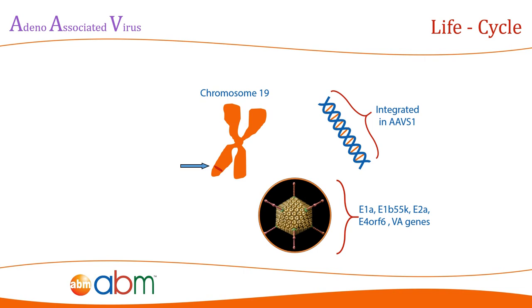E1A, E1B55K, E2A, E4ORF6, and viral-associated genes from the adenovirus are the known helper genes required for AAV replication.